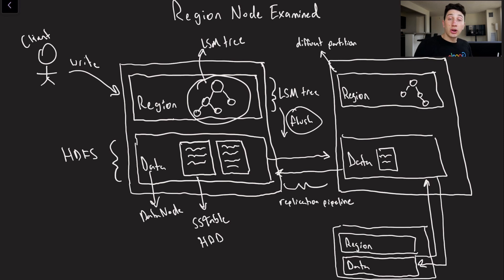So keep in mind that the data node is part of Hadoop, right? It's part of HDFS. And what happens to things that get sent as files to Hadoop? They get replicated. How do they get replicated? Through the replication pipeline.